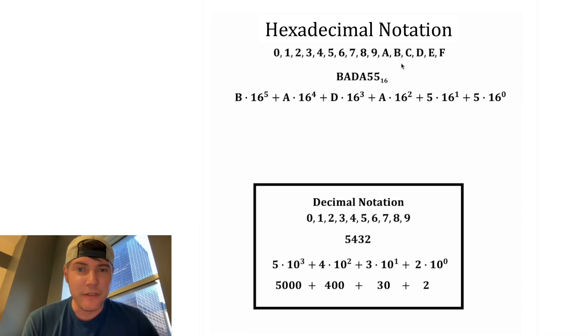A would be like 10. B would be 11. C is 12. D is 13, E is 14, and F is 15. So we have 16 unique digits for hexadecimal notation.